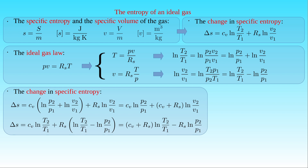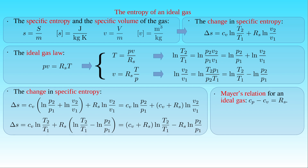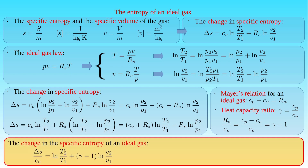In the last step, we apply Meyer's relation for an ideal gas stating that the difference between the specific heat capacity C_P at constant pressure and C_V at constant volume equals the specific gas constant R_S. Since the heat capacity ratio gamma is defined by C_P over C_V, R_S over C_V equals gamma minus 1. Substituting this expression, we can summarize the change in specific entropy of an ideal gas.